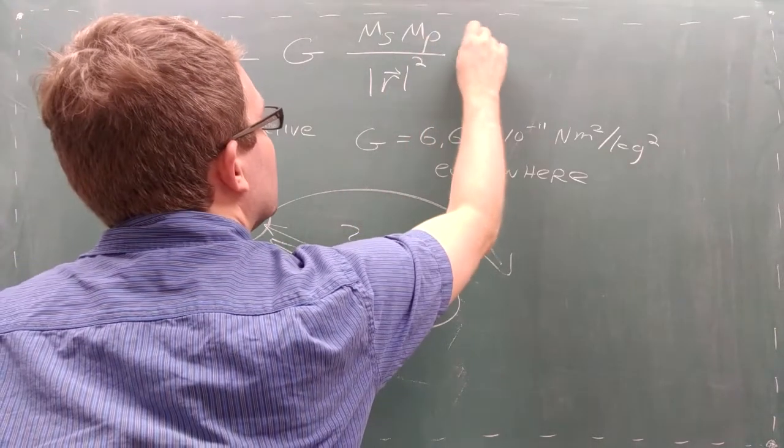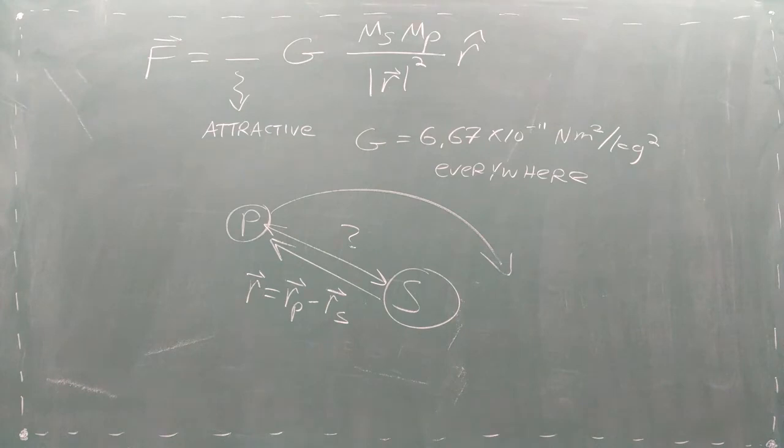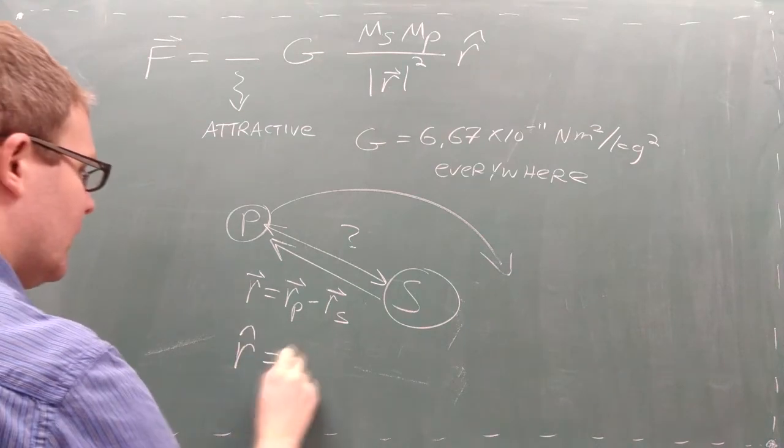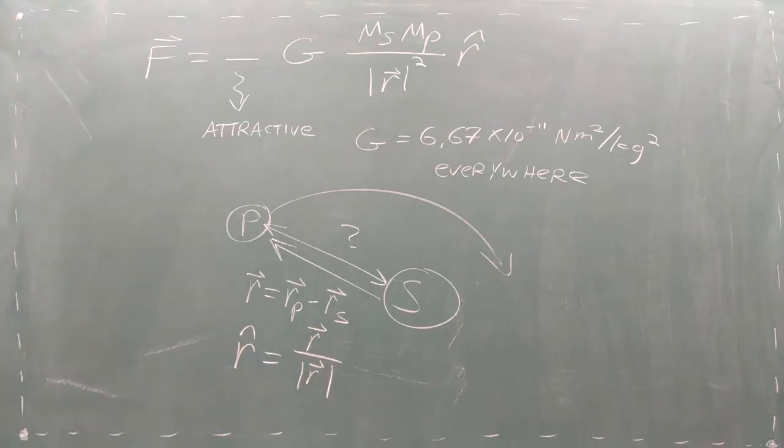Finally, we calculate a vector called r hat which gives the direction of the gravitational force. We can calculate r hat by dividing the distance vector by its magnitude.